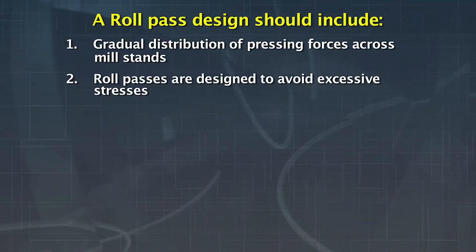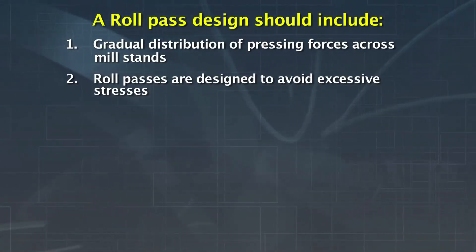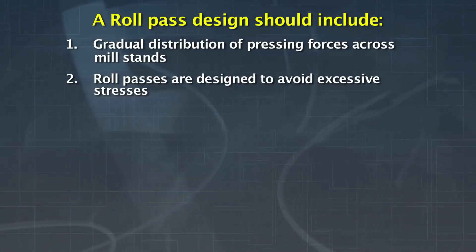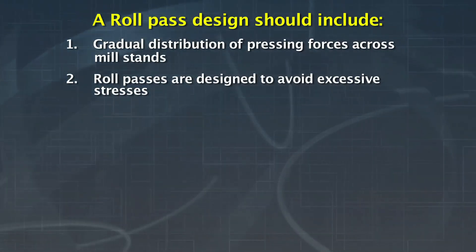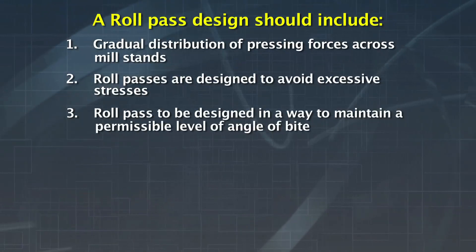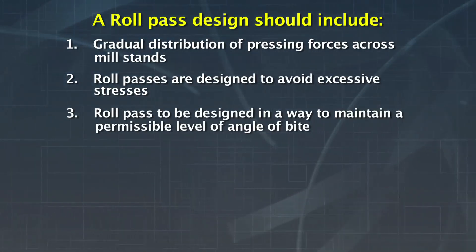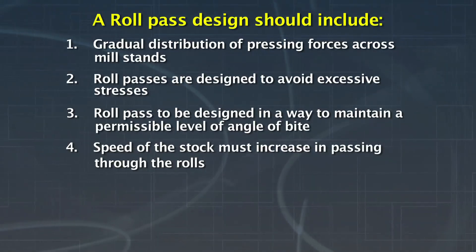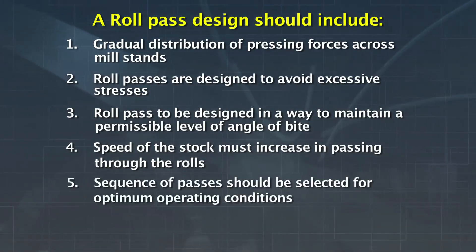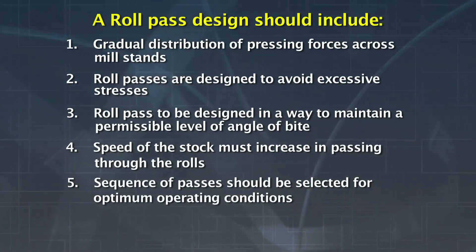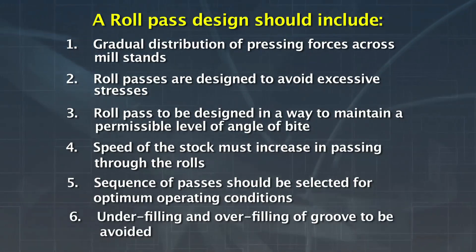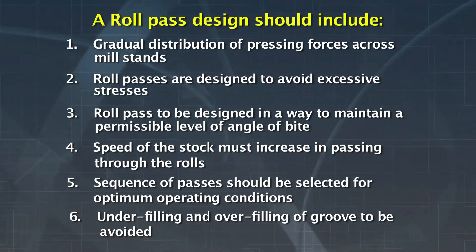The roll passes are designed to avoid excessive stresses in the steel being rolled, since such stresses can lead to the formation of cracks and other flaws. Roll passes should be designed to maintain a permissible level of angle of bite. The speed of the stock must increase in passing through the rolls as the cross-sectional area decreases. A proper sequence of passes should be selected for optimum operating conditions, and underfilling and overfilling of the groove must be avoided.